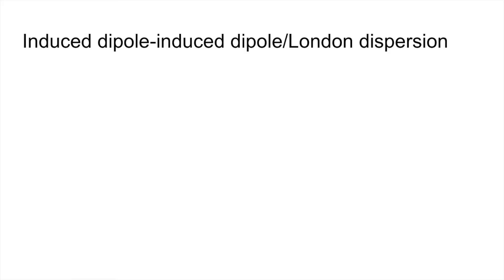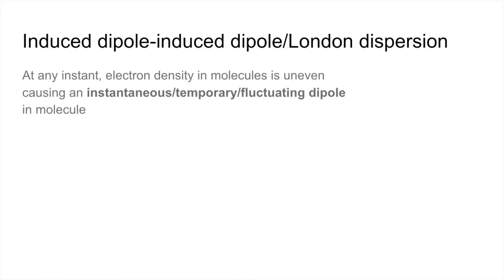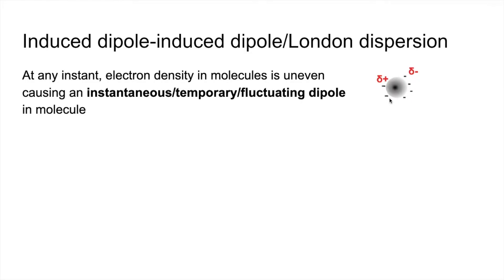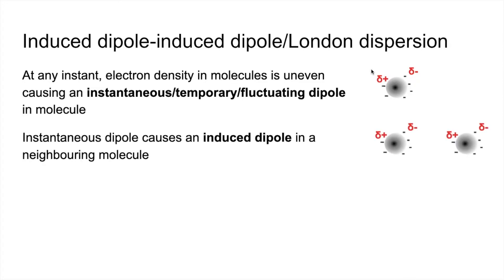Starting with induced dipole-dipole, or London dispersion forces. At any instant, the electron density in a molecule is uneven, and that causes an instantaneous, temporary, or fluctuating dipole in the molecule. Imagine this molecule here — at this instant there is slightly more electron density on the right-hand side than the left, giving an instantaneous dipole: slightly negative on one end, slightly positive on the other.